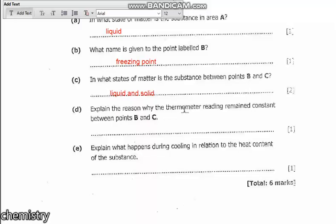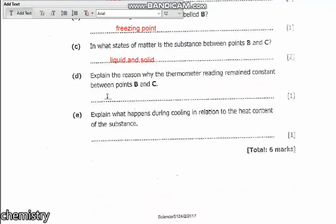Explain the reason why the thermometer reading remained constant between B and C. Now between B and C, we have two states. That means there's a change of state from liquid to solid. So there is a physical change taking place. That's why we have a constant temperature.